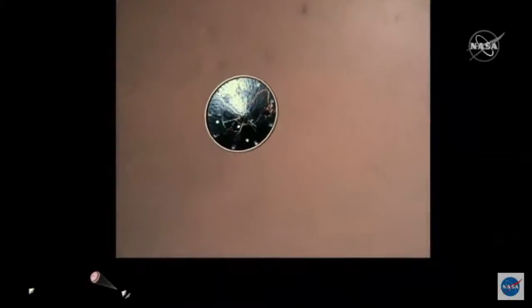Heat shield sep. Perseverance has now slowed to subsonic speeds and the heat shield has been separated. This allows both the radar and cameras to get their first look at the surface. Current velocity is 145 meters per second at an altitude of about 9.5 kilometers above the surface.